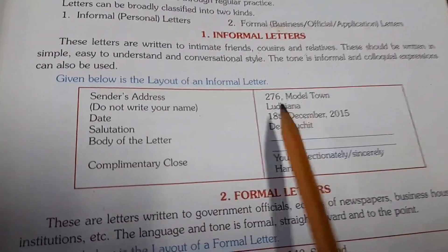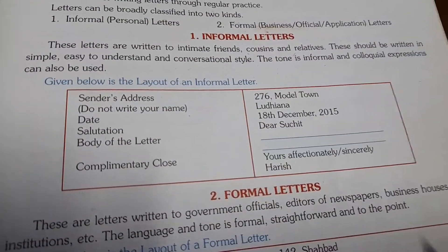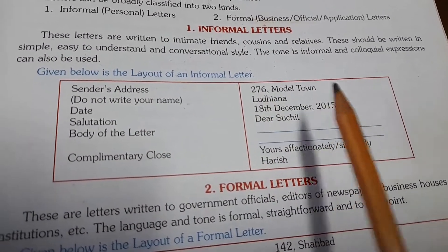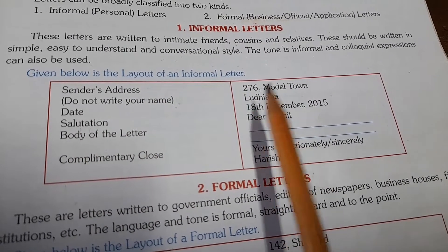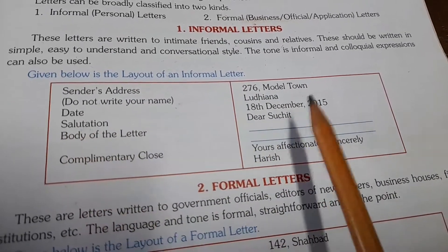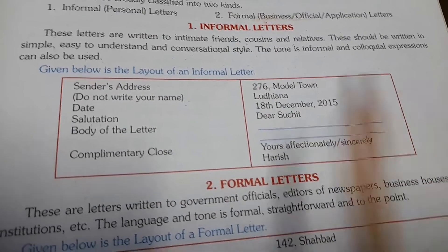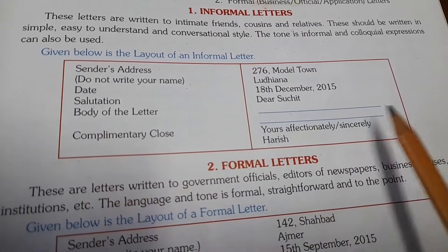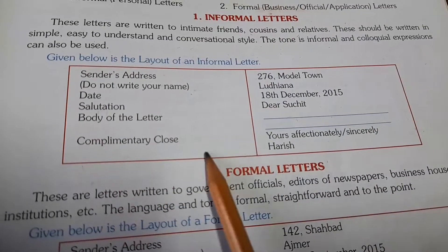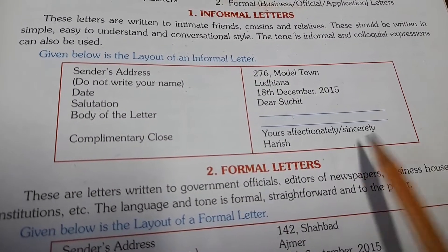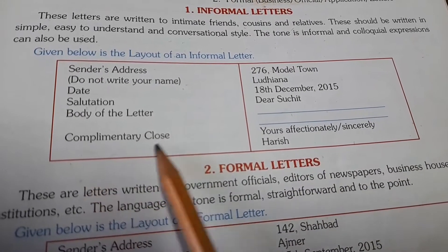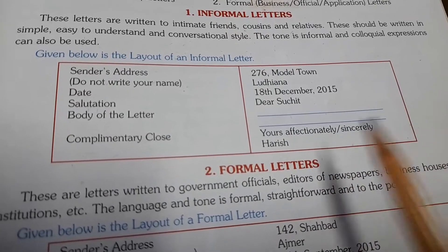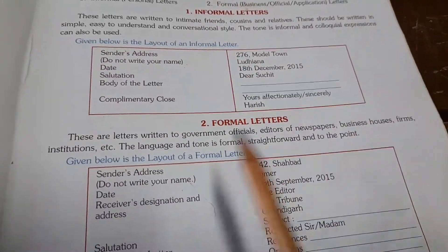Here, the layout of the informal letter is given. First, we have to write the sender's address. Do not write your name at the top — only the address. Then write the date, for example, 18 December 2000. Then the salutation: Dear Suchet. Then the body of the letter. And finally, the complimentary close — you can write 'Yours affectionately,' 'Sincerely,' or 'With love,' followed by your name.